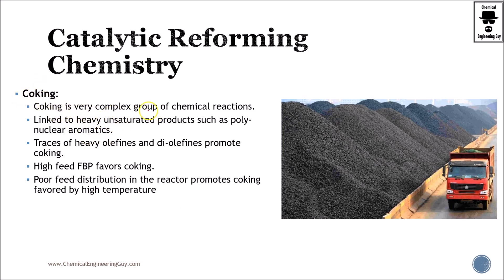Coking is a very complex group of chemical reactions that eventually cause formation of this black dust or solid material. It's linked to heavy unsaturated products such as polynuclear aromatics, traces of heavy olefins. The olefins can promote coking. High feed FBP favors coking, perfect distribution in the reactor promotes coking. Favored by high temperature so that's what you want to avoid.